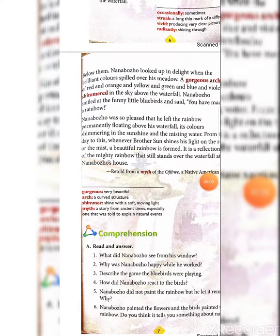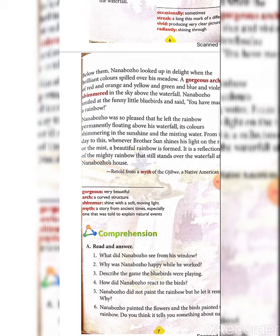Question 3: Describe the game the bluebirds were playing. Answer: The two little bluebirds were playing games with each other. The first little bluebird would chase his friend across the meadow one way, then they would turn around and the second bluebird would chase him back the other way. Then they played a second game to fast-dive down to the grass fields.